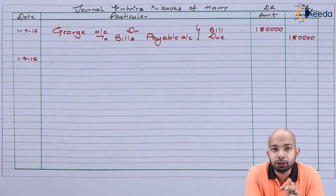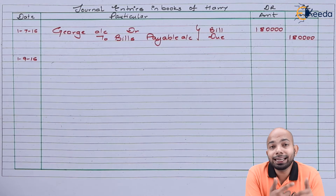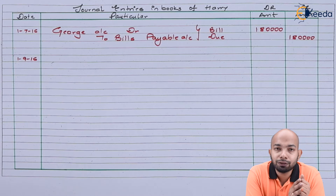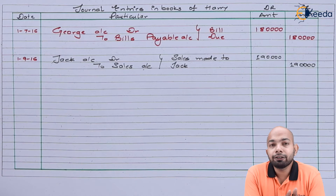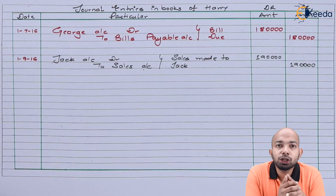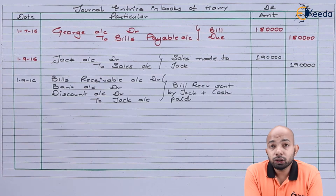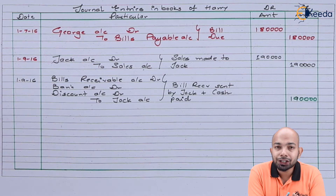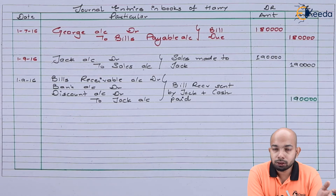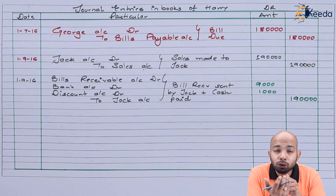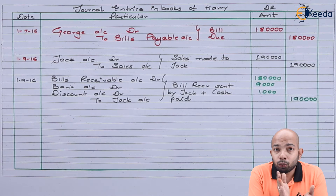The next entry is the sales Harry made to Jack for 1 lakh 90,000. Jack gave Harry a bill of exchange for 1 lakh 80,000, paid 9,000 in cash, and the rest — 1,000 — was a complete discount. So the 1 lakh 90,000 bifurcates as: 1,000 discount, 9,000 cash, and the balance as bills receivable.